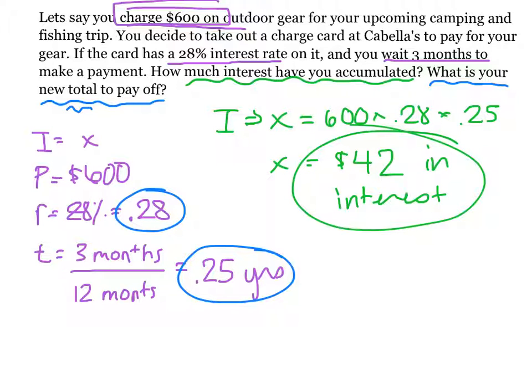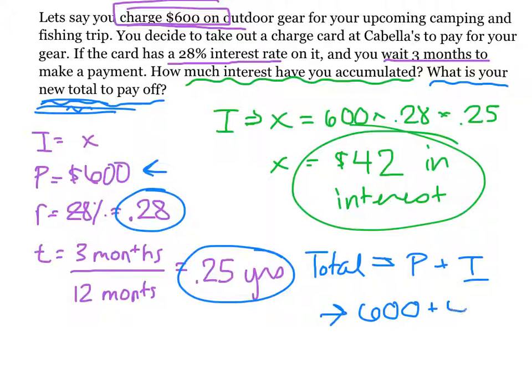Our second question says, what is your new total to pay off? To find the total, it equals our principal amount that we already owe or already invested, plus our interest. So our total is the principal amount that we start with, 600, plus our interest of $42. So we now owe Cabela's $642 for our charge card.